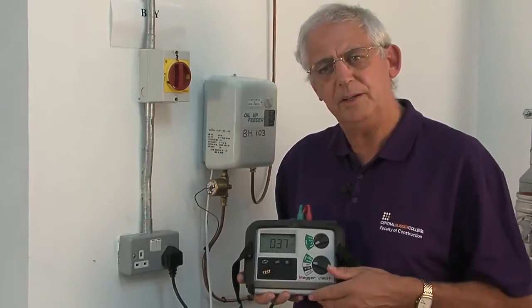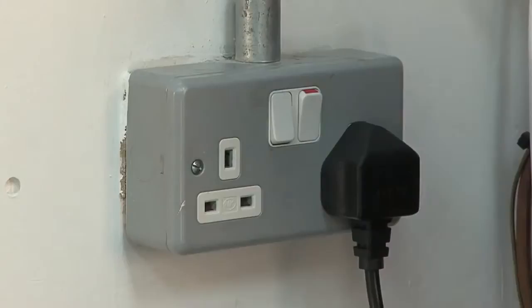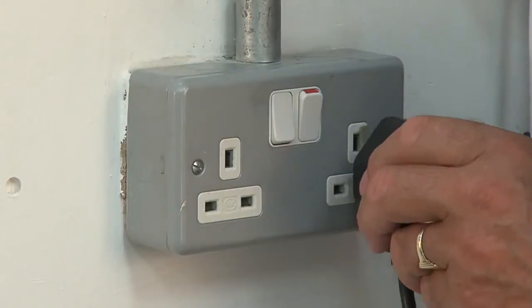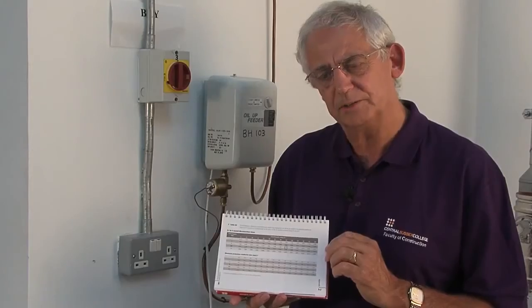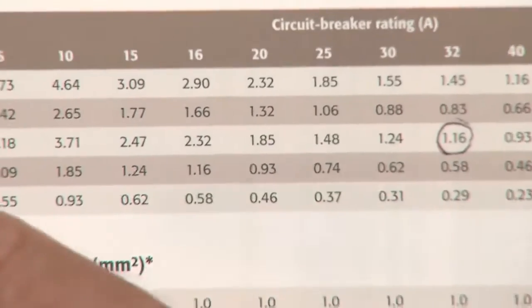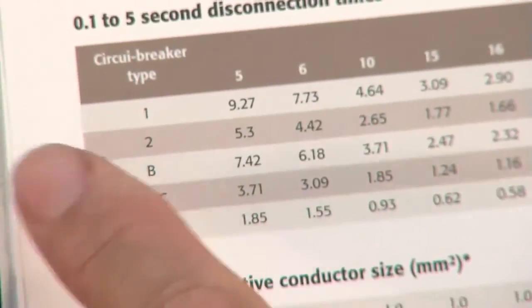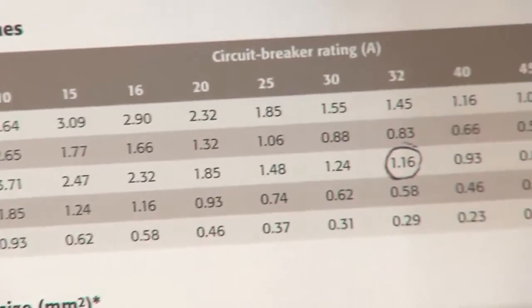I can compare that directly with the tables in the on-site guide. I know I've got a Type B 32-amp protective device. If I use the chart, I can go down the left-hand column to Type B, along the top to 32.